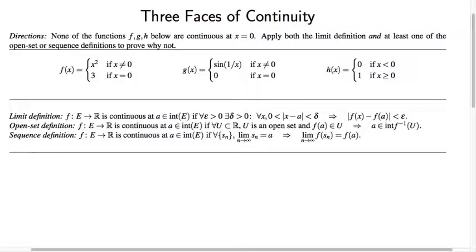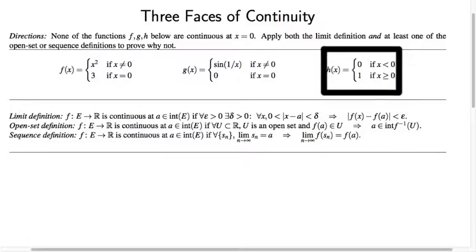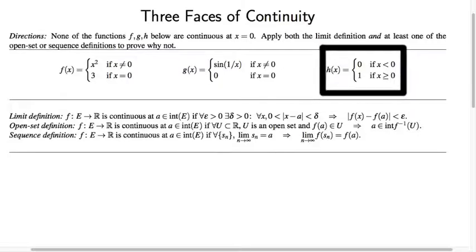The last goal is to take one of these three functions, and for today, just to make our lives as simple as possible, I'm going to focus on the h(x) function, the step function, or the so-called Heaviside function. We're going to look at why it is that this function violates all three of these equivalent definitions of what it means for a function to be continuous.